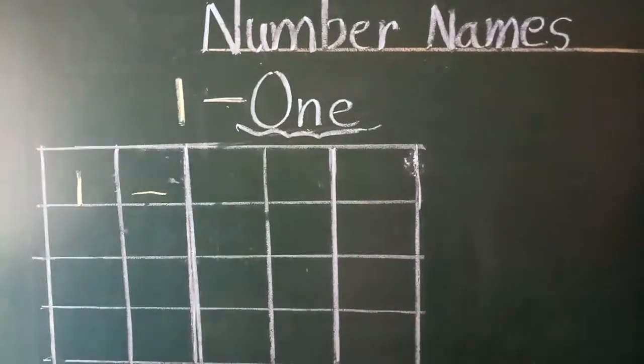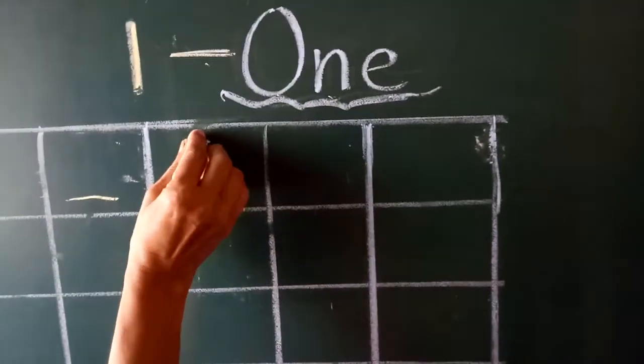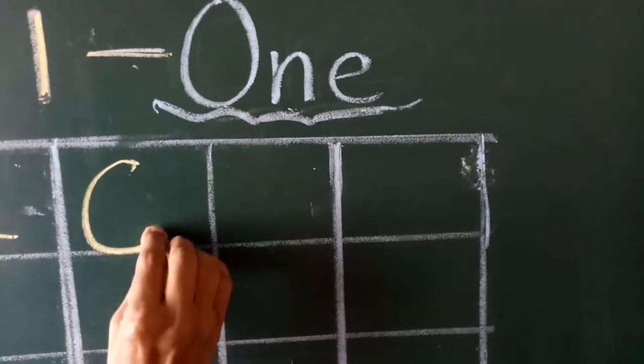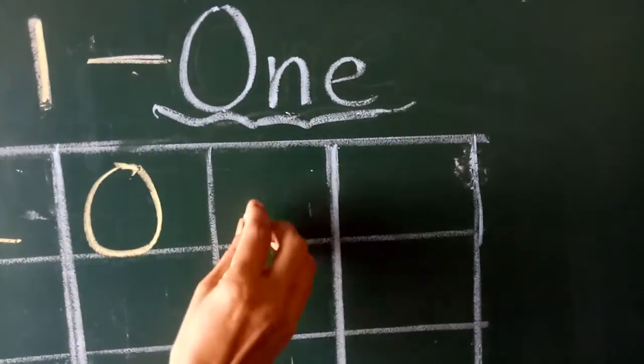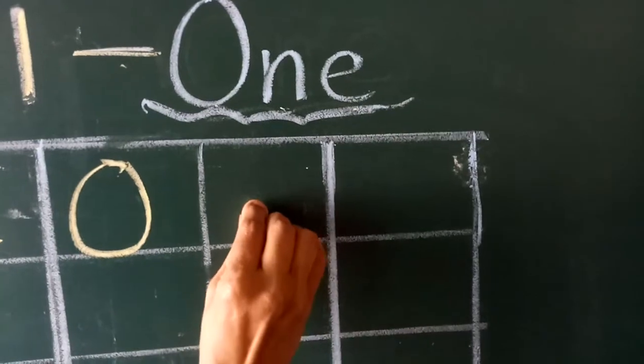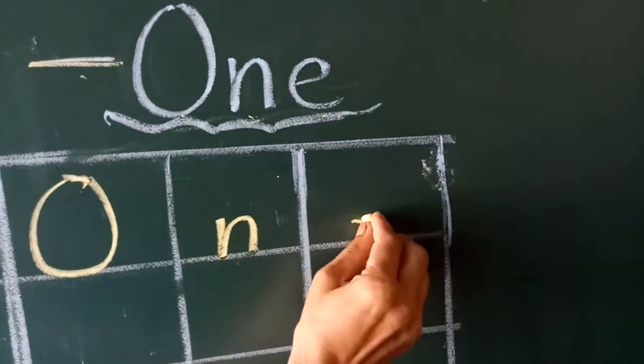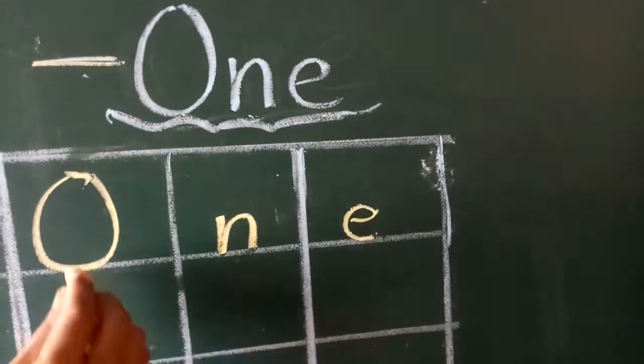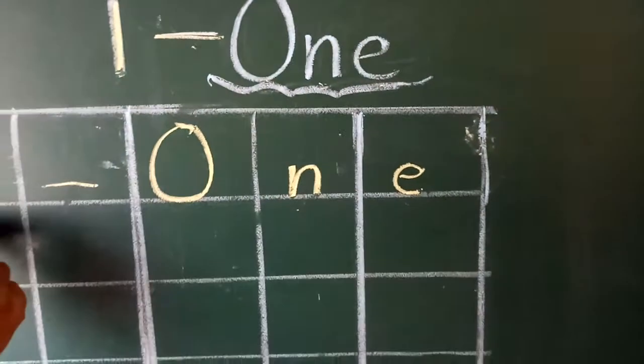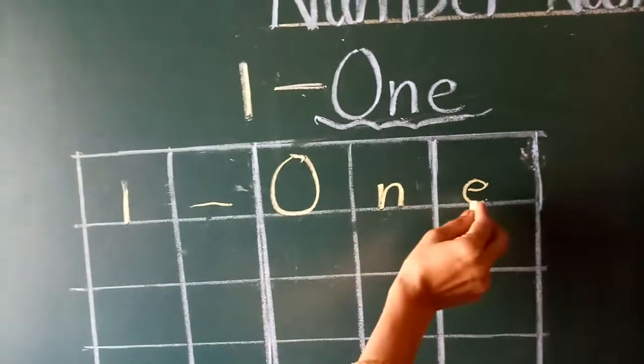Dash. You have to write O - big. And N, small. E also small. O-N-E. One. O-N-E. One.